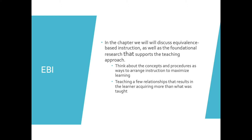We're going to discuss stimulus equivalence. One of the things I want you to think about as we go through this chapter is how we're going to apply these concepts — what we'll learn as a methodology — to arrange teaching. If you're teaching a learner with autism to form conditional discriminations, how can we arrange our teaching to maximize learning outcomes? We can teach a few relationships, but the outcome will be well beyond what we've explicitly taught.